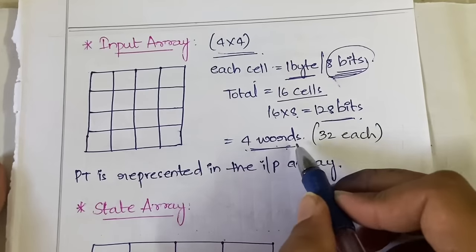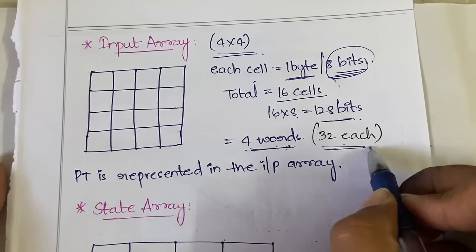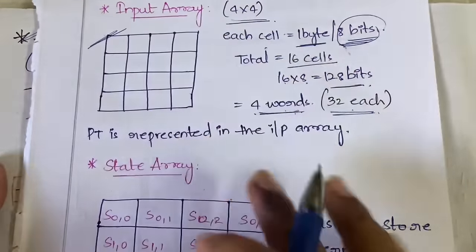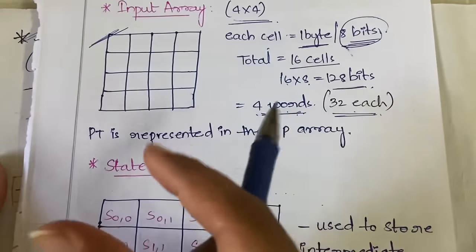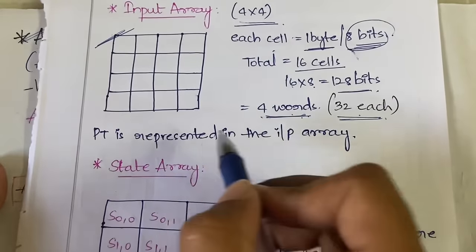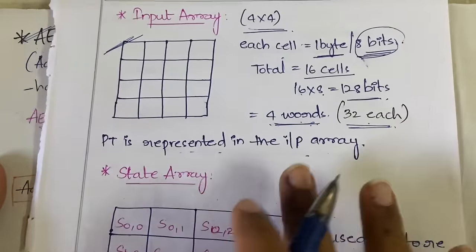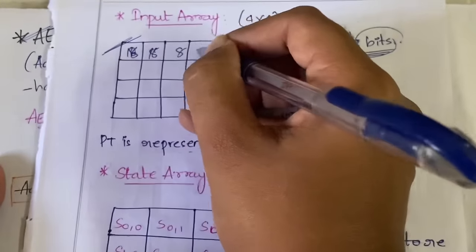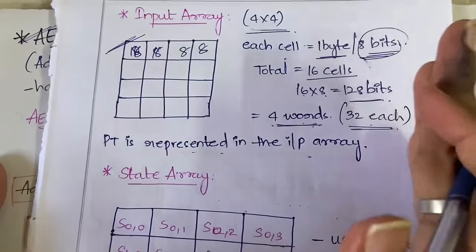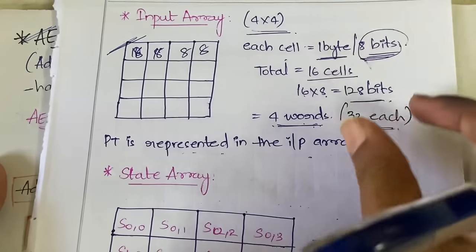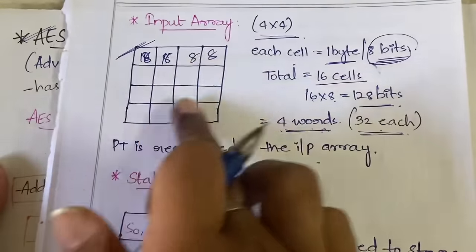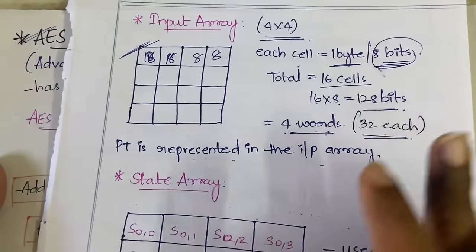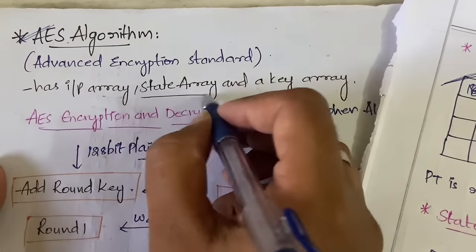You can also represent the input in terms of words — four words, where the size of each word is 32 bits. Again, 4 into 32 gives you 128. The plain text that we have is represented in this input array, with 8 bits stored in each cell, totaling 16 into 8 which equals 128 bits stored across the entire input array.